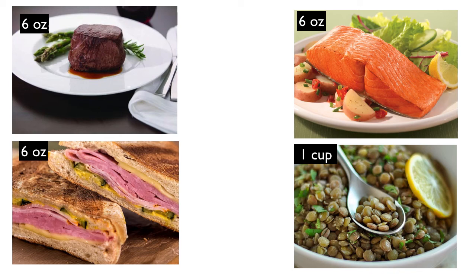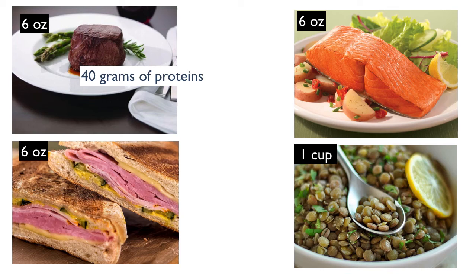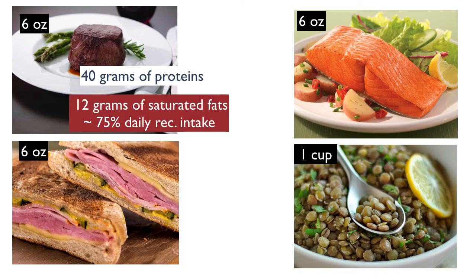Let's compare four different protein sources and look at their nutritional content for an equivalent amount — six ounces for the meats and one cup for lentils. A piece of steak comes with 40 grams of protein, which for many adults would be sufficient to meet their daily protein needs, and it is a complete protein. But along with those 40 grams, this piece of meat also has 12 grams of saturated fats, which may lead to higher rates of cardiovascular disease, and those 12 grams account for about 75% of the daily recommended intake in just that one meal.